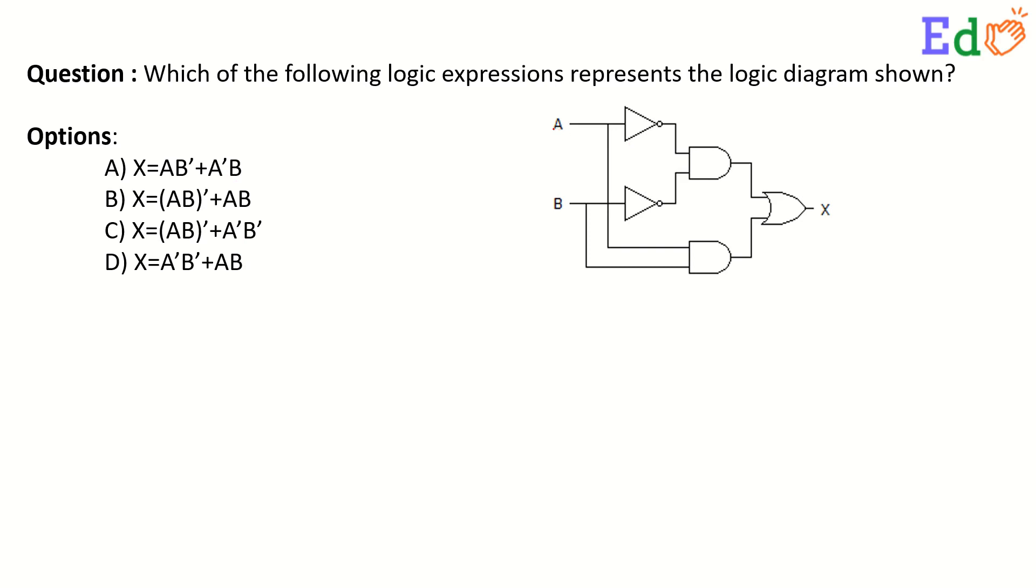Here we can get A complement from this NOT gate. This is A complement, and here we get another B complement in this output. These two are passed through an AND gate, and here we have an AND of A complement and B complement.